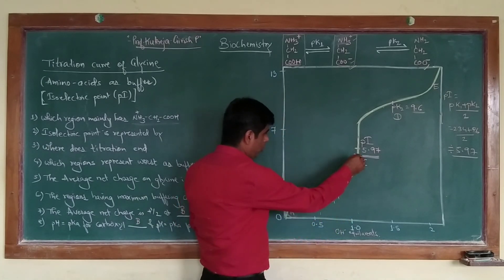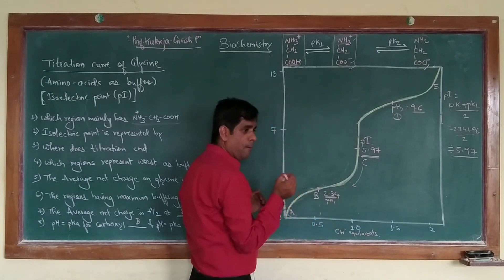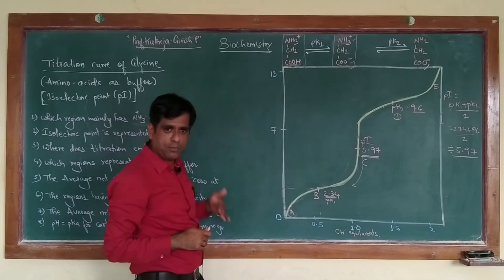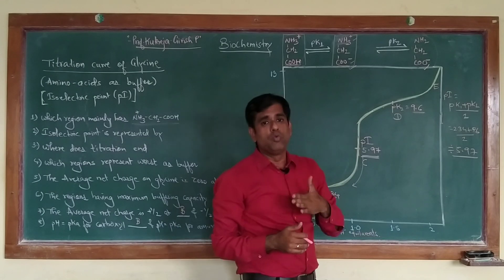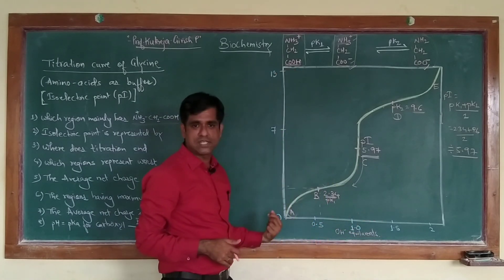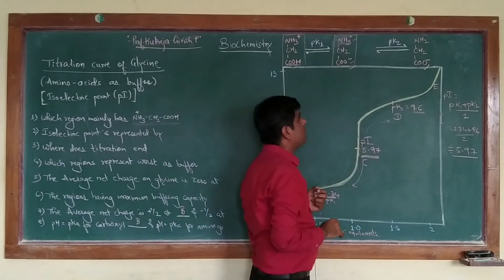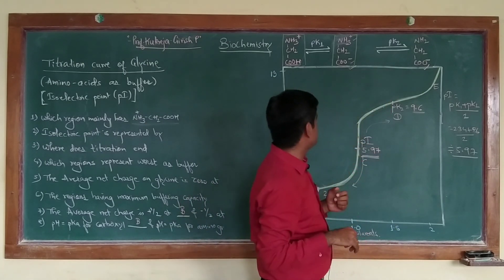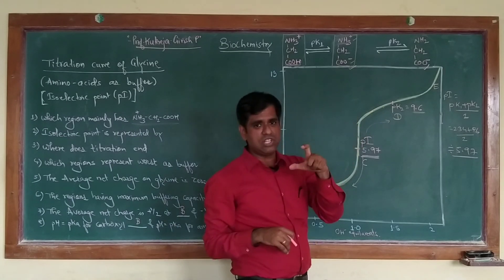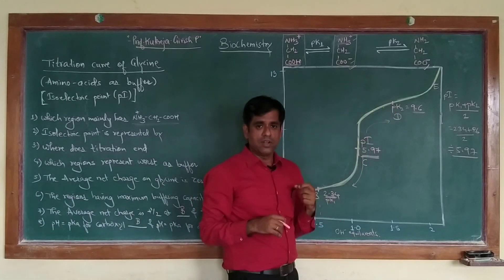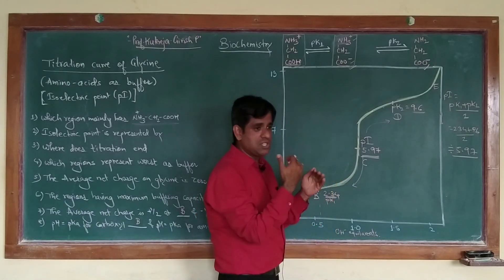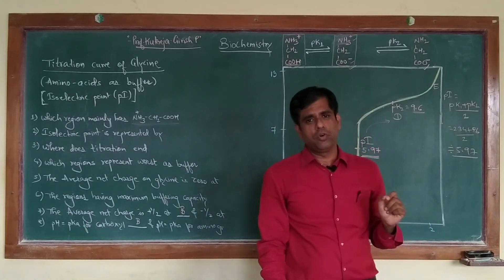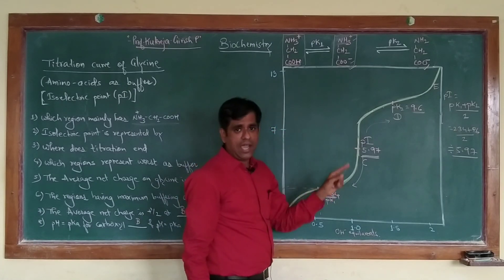Below the PI, any pH value will give this amino acid a positive charge. So below the PI, if you place it in an electric field, the amino acid will move towards the cathode because it has a net positive charge. Above its PI, this particular amino acid has a net negative charge, and in an electric field or ion exchange column it will behave accordingly. The intensity of the charge depends on how far the pH is from the PI. At the PI itself, the net charge is 0 and therefore the electrophoretic mobility of the amino acid is 0.